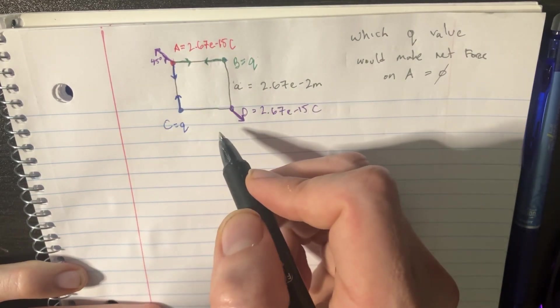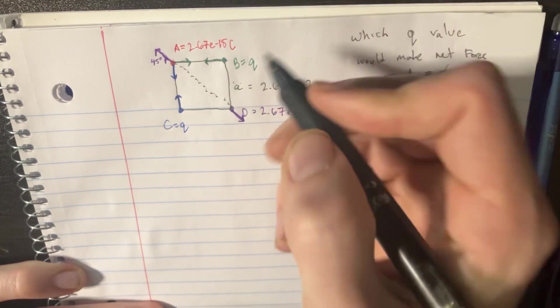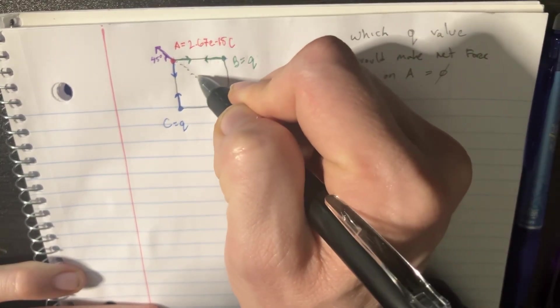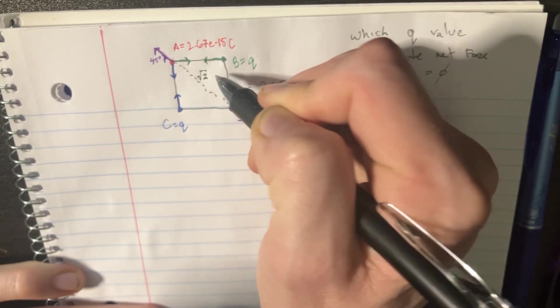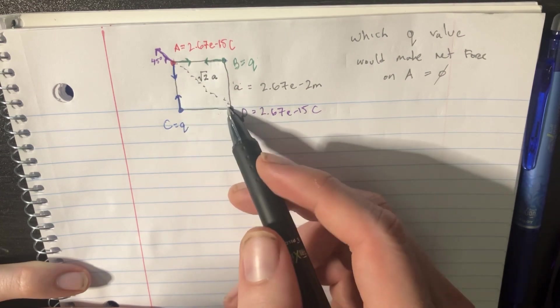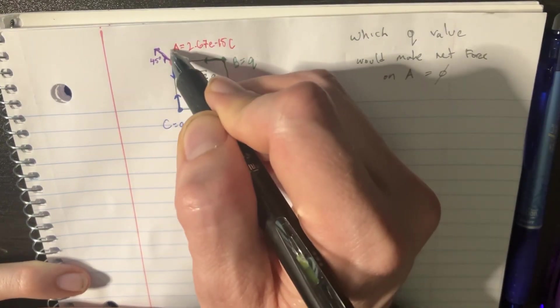So now we have to add up these forces. And let's figure out what this length is. Based off of the Pythagorean theorem, this length is actually going to be square root of 2 times A. That's A square root of 2 right over there in the length. And then we need to represent some forces.